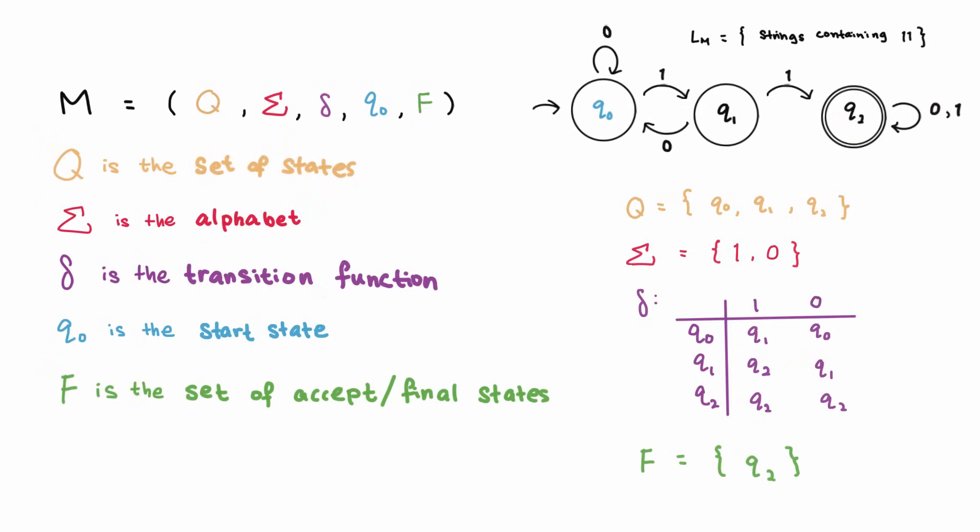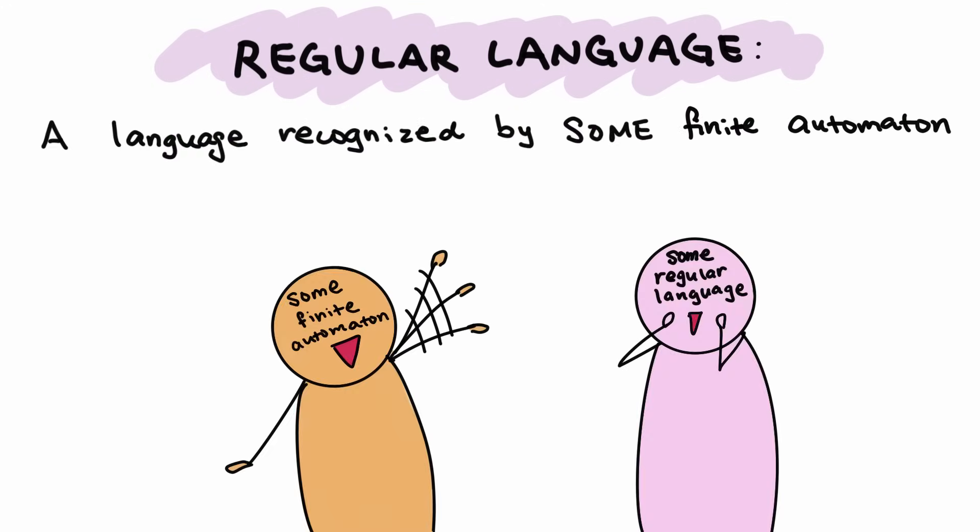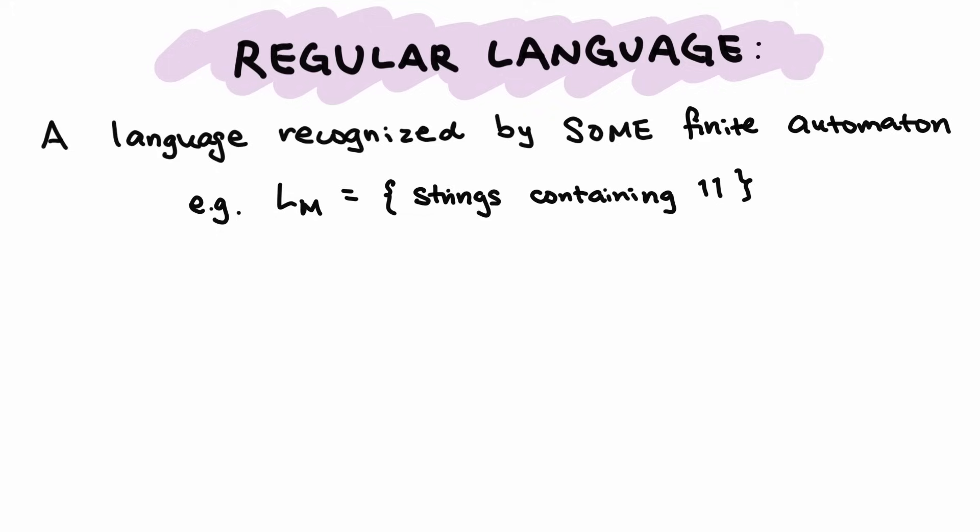One final note on finite automata. A language is also a regular language if it is recognized by some finite automaton. So the language containing all the strings with two consecutive ones is a regular language, since we had constructed an automaton that recognizes it.